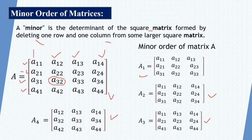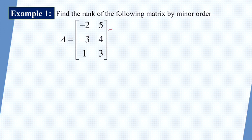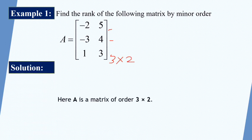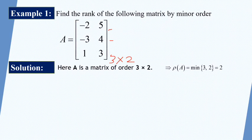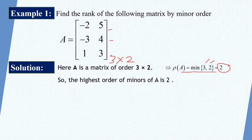I hope you understand how to make the minor of a given matrix. Now Example 1 on the minor method: find the rank of the following matrix by the minor method. A equals to [−2, 5; −3, 4; 1, 3]. This is a matrix of order 3 by 2, and we have to find its rank. Since rho A equals the minimum of the number of rows and columns, the minimum is 2. So the rank should be 2 or less than 2, and the highest order of minor of A is 2.